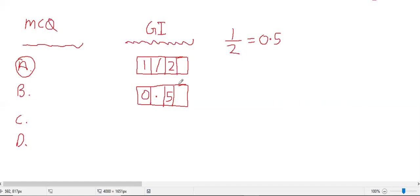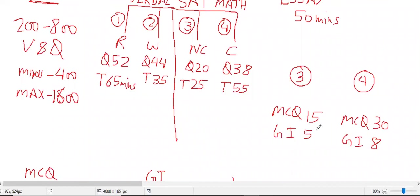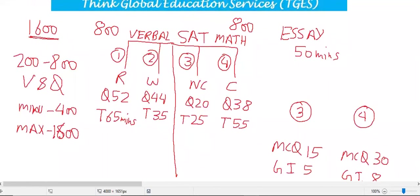To recap: Section 3 has 15 MCQs and 5 Grid-ins; Section 4 has 30 MCQs and 8 Grid-ins — always fixed. In the No Calculator section, the calculator is not allowed; in the Calculator section, the calculator is allowed.